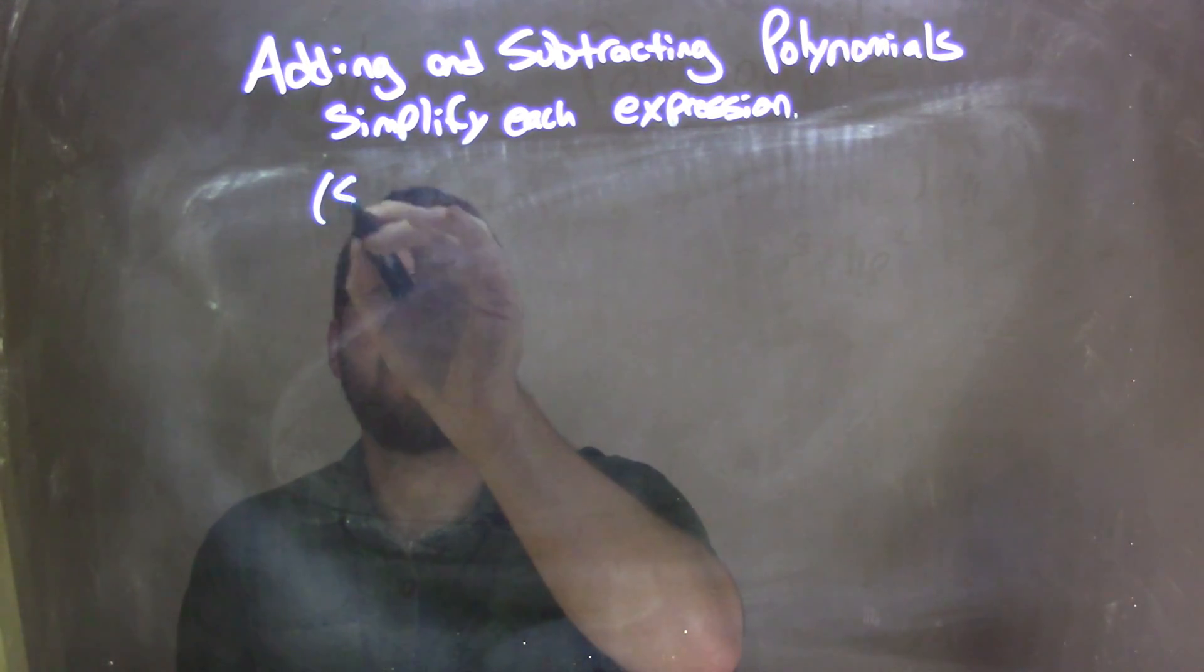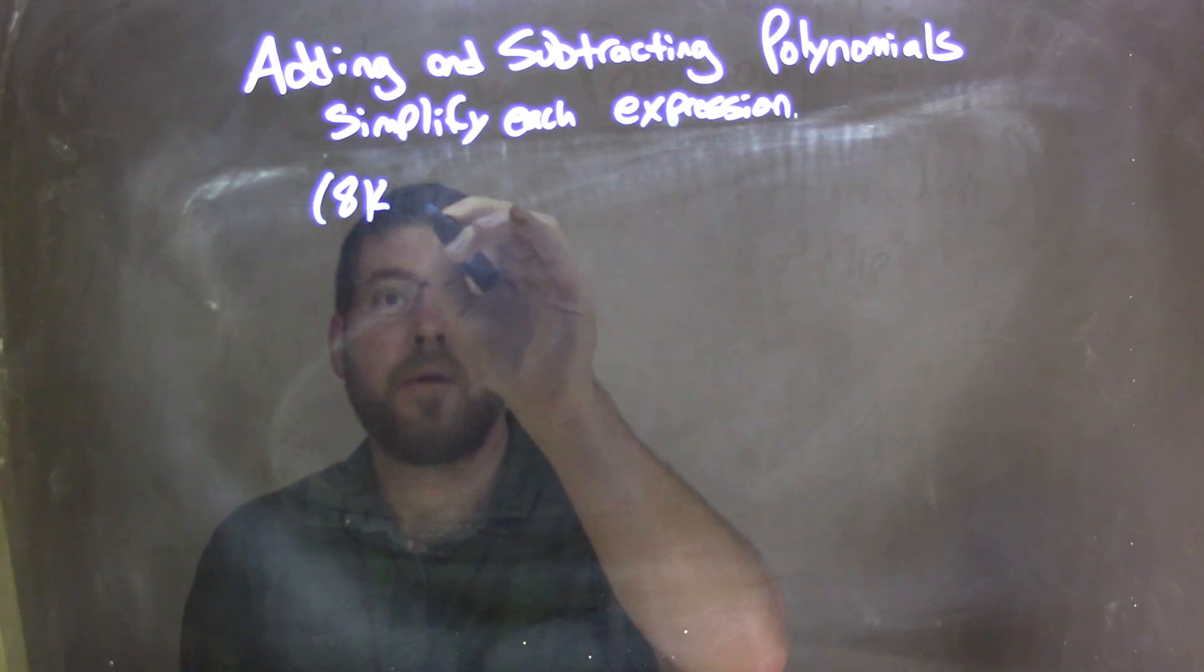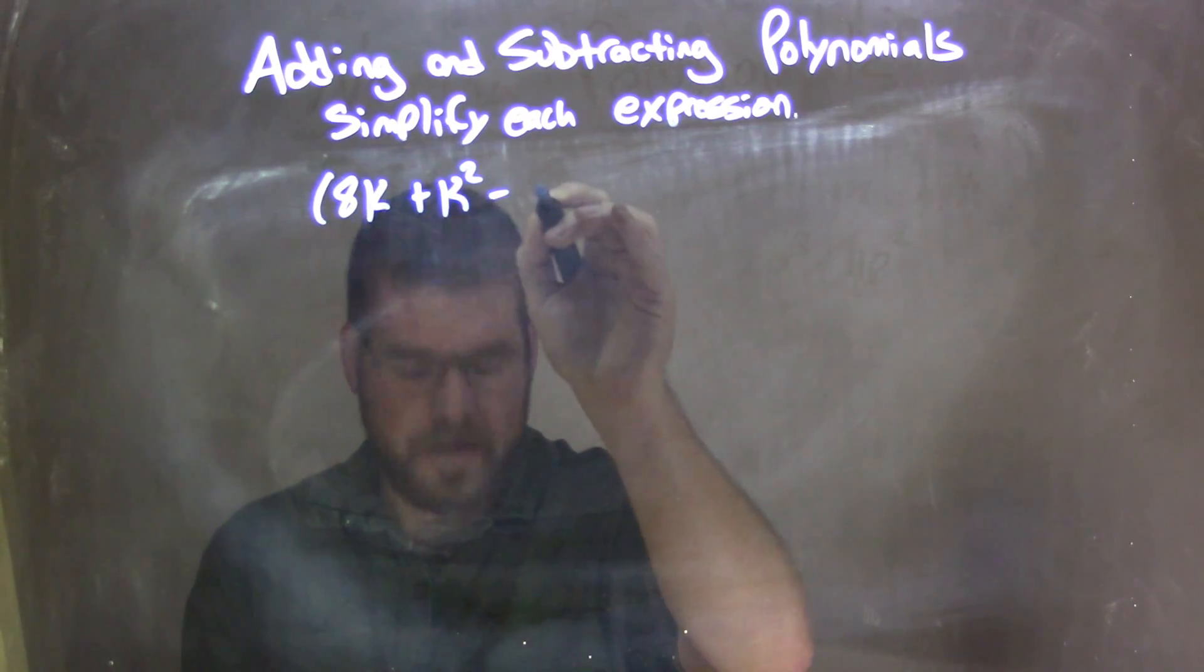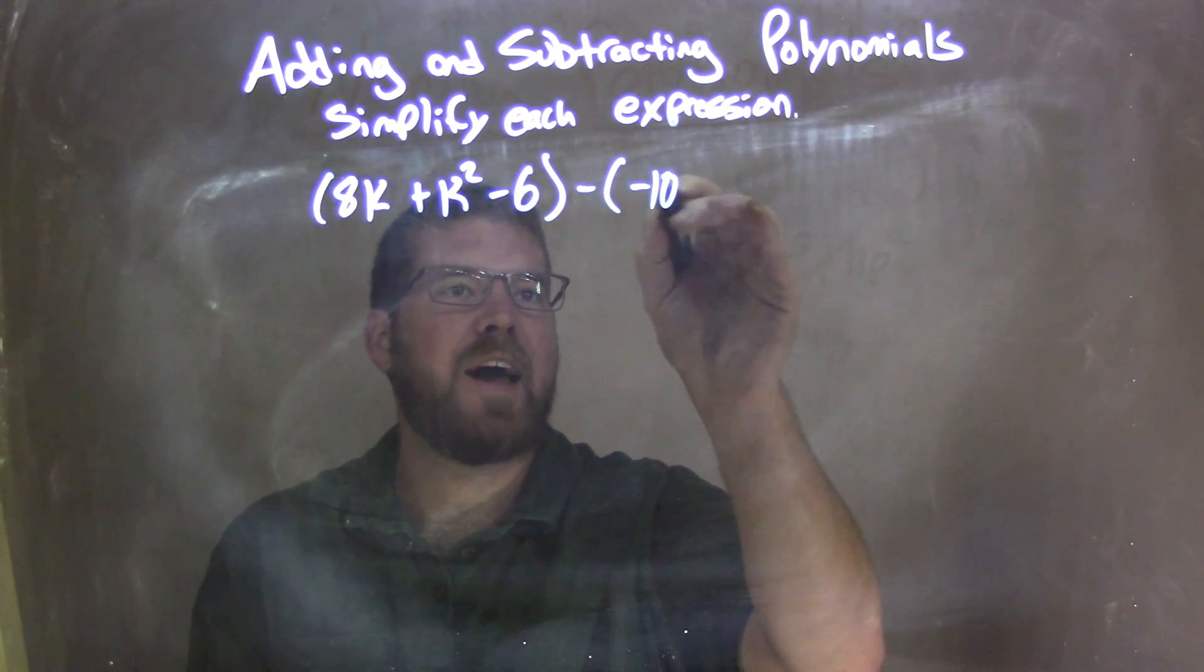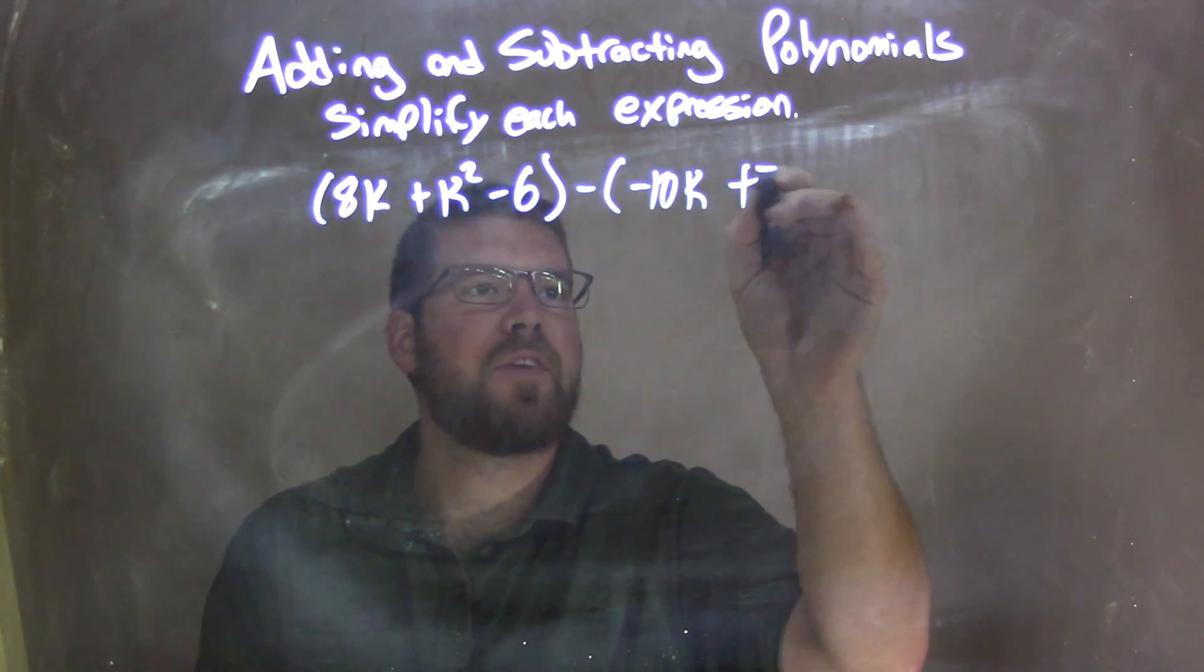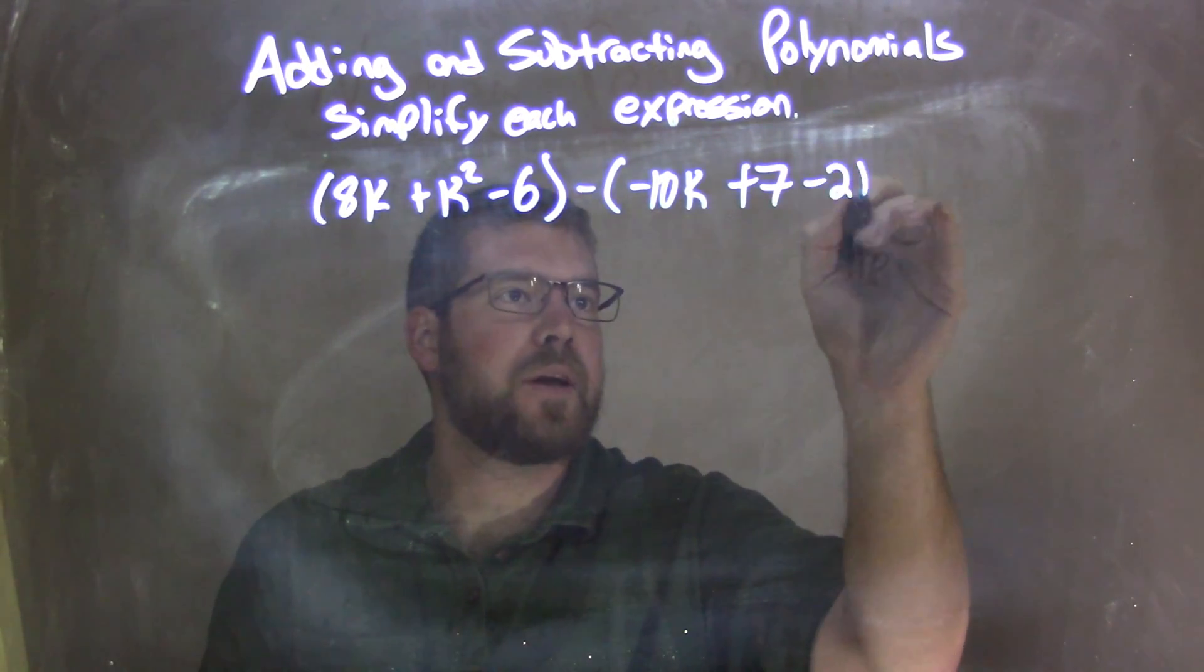So if I was given this expression: 8k plus k squared minus 6, in parentheses, minus another parentheses with negative 10k plus 7 minus 2k to the second power.